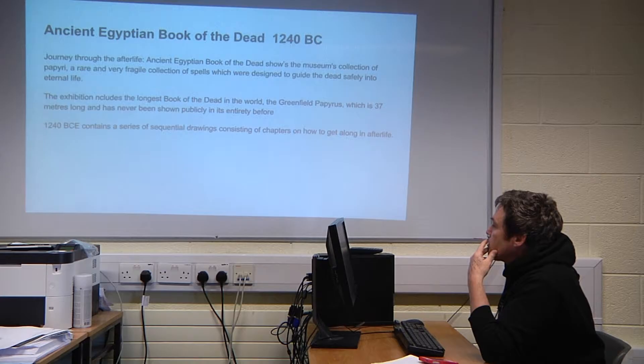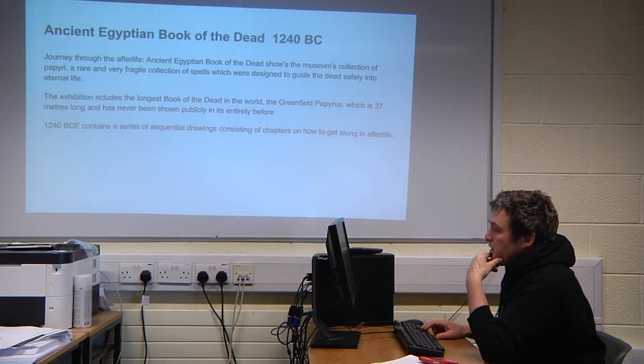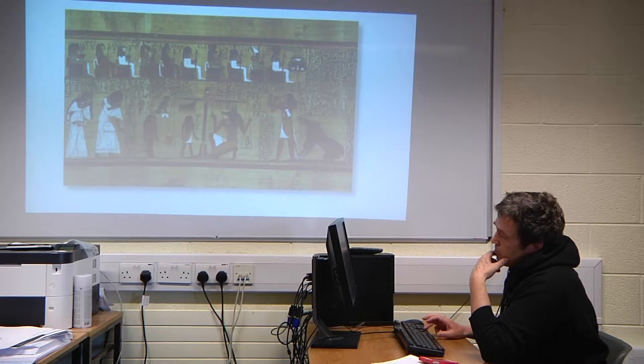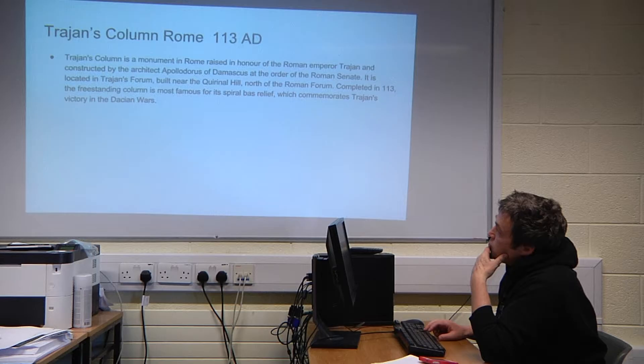Around 1200 BC in Egypt, they had the Book of the Dead. One that was found was 37 metres long, and it was used to guide the dead into the next life. It showed the movement of time.